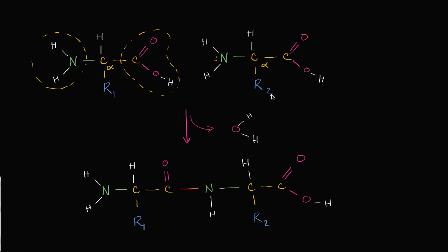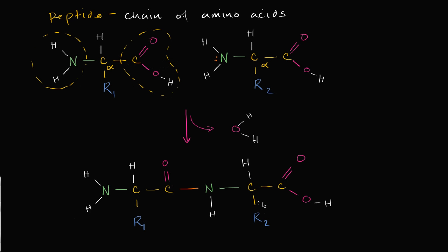What we're going to concern ourselves with in this video is: how do you take two amino acids and form a peptide out of them? A peptide is nothing more than a chain of amino acids. How do you take these two amino acids and form a dipeptide? A dipeptide would have two amino acids — that would be the smallest possible peptide. But you could keep adding amino acids and form polypeptides.